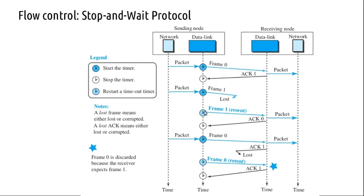Say the receiver sends an acknowledgement frame with sequence number 0, but the acknowledgement is lost. The sender thinks that frame 0 was not received correctly because it did not get back the acknowledgement, so it will resend the frame. The receiver data link layer then says it is expecting a frame with sequence number 1 but got a frame with sequence number 0, so it discards the frame. Thus duplication of frame 0 is prevented.